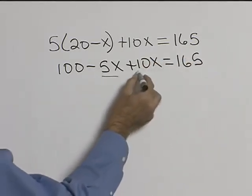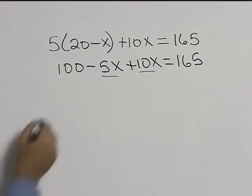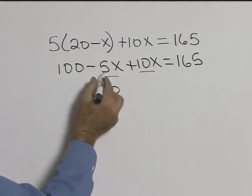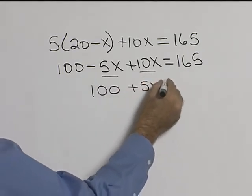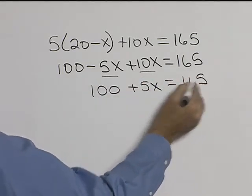Now we have some like terms with x's on the left-hand side. So we can write this as 100, negative 5 plus 10 will give us plus 5x is equal to 165.